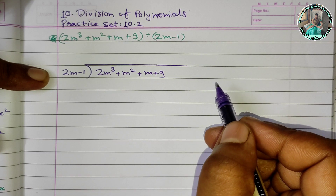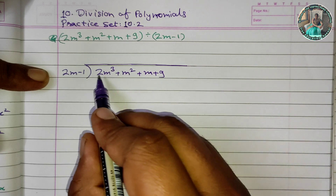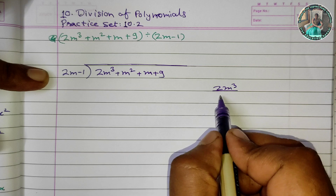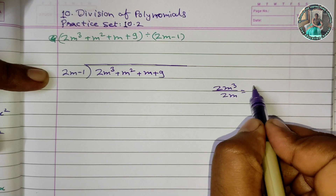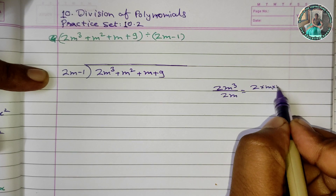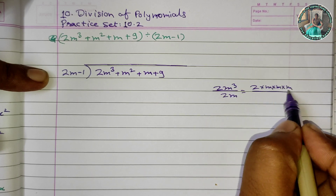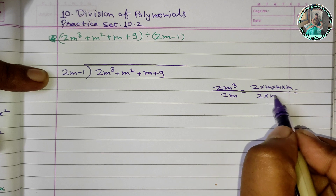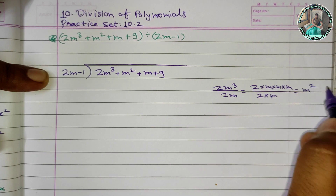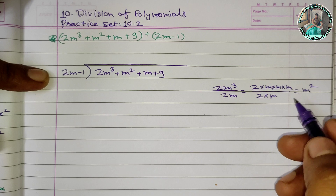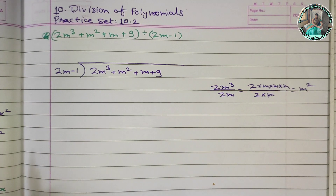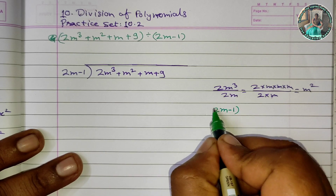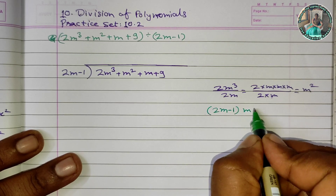We write the divisor 2m minus 1 and the dividend 2m cubed plus m squared plus m plus 9. The first term is 2m cubed. We divide 2m cubed by 2m to get m squared. We multiply 2m minus 1 by m squared to get 2m cubed minus m squared, and we write that below.